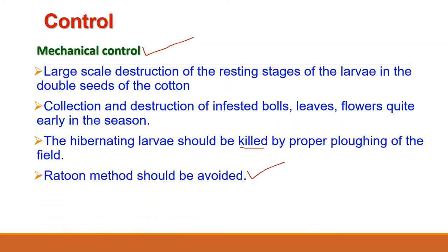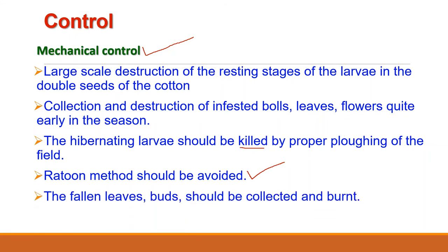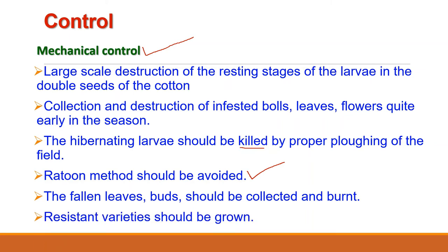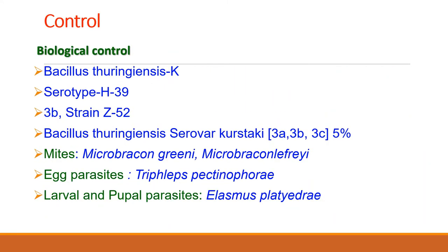Ratooning of cotton should be avoided in infested areas and pest-resistant varieties should be grown. Late planting of the crop is a cultural method to avoid overwintering larvae — these overwintering larvae, after pupation and emergence of the moth, require a plant to lay eggs and food for the hatching larvae, so if the crop is planted late, they will not find anything to feed on, killing the hibernating larvae.